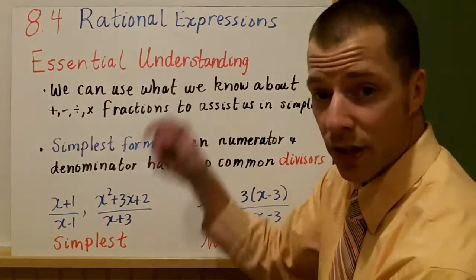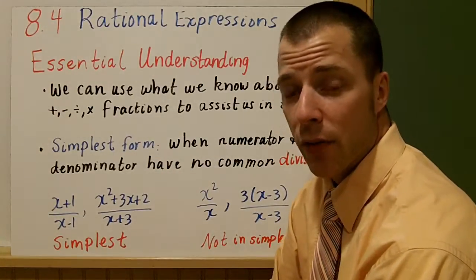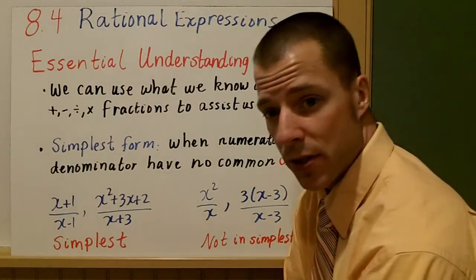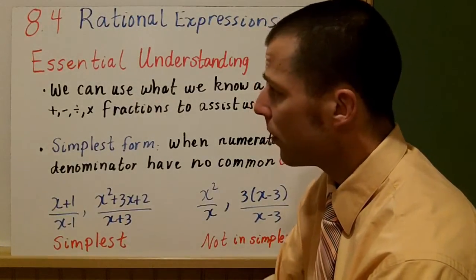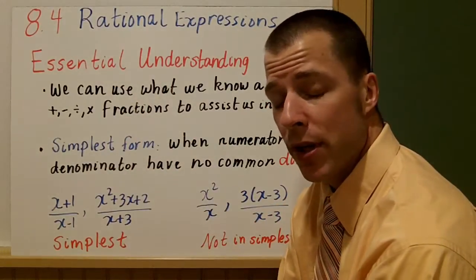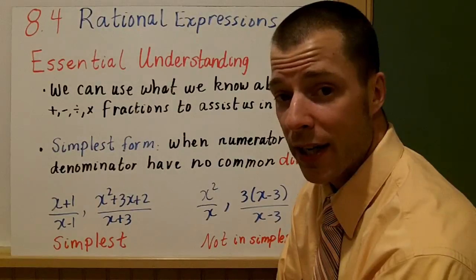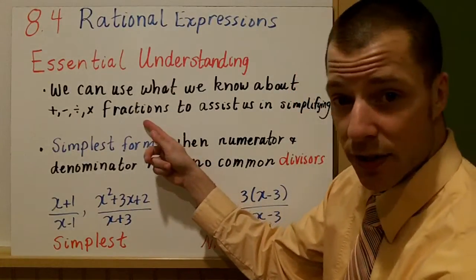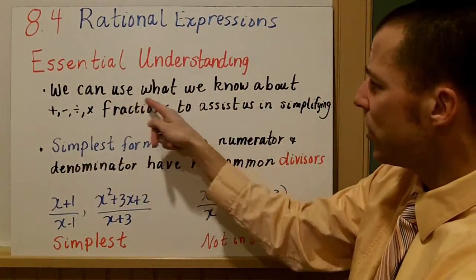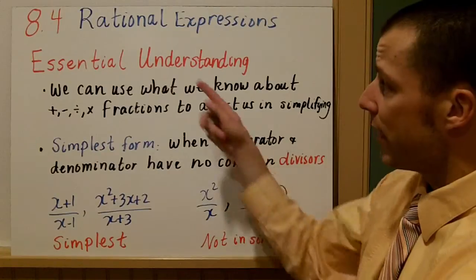Welcome to Section 8.4, Rational Expressions. Throughout this Algebra 2 course we've seen where we've introduced functions, graphed these functions, and then performed operations with these different functions. We're going to be talking about rational expressions. We've already talked about graphing, and now we're going to be looking at operations with those functions — starting with multiplication and division with rational expressions, because it's actually a little bit easier than adding or subtracting, much like with fractions. The essential understanding here is that we can use what we know about adding, subtracting, multiplying, and dividing fractions to assist us with simplifying these rational expressions.